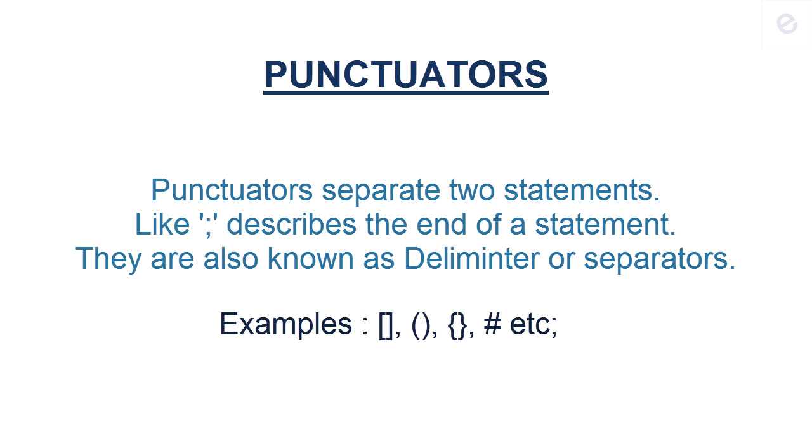Now let's talk about punctuators. Punctuators separate two statements. In fact, the whole C program is made up of punctuators. The semicolon indicates the end of the statement. The curly braces indicate a block of code, while the square brackets indicate an array. While programming in our later tutorials, we would come across many of these punctuators.